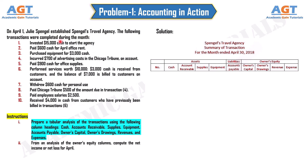Let's analyze each transaction and record them in the table. Transaction 1: invested $15,000 cash to start the agency. Assets in the form of cash increase by $15,000, and Owner's Equity in the form of Owner's Capital increases by $15,000.